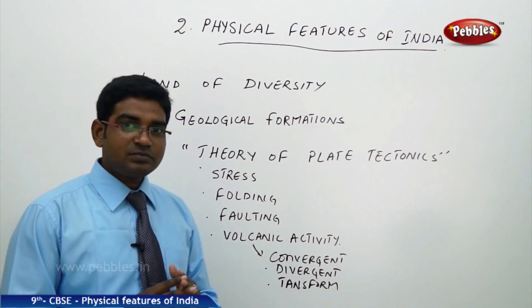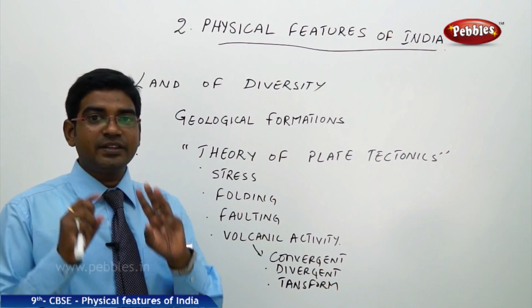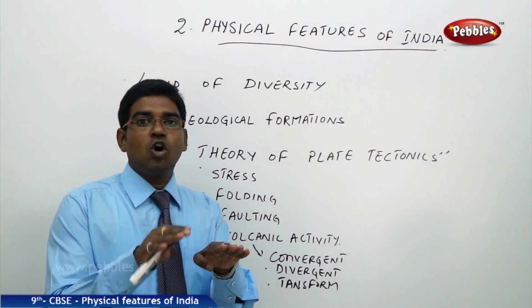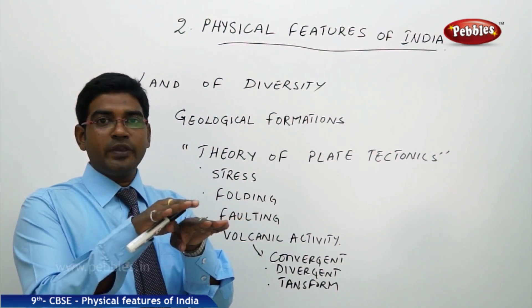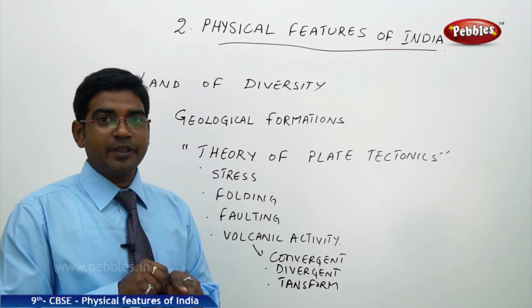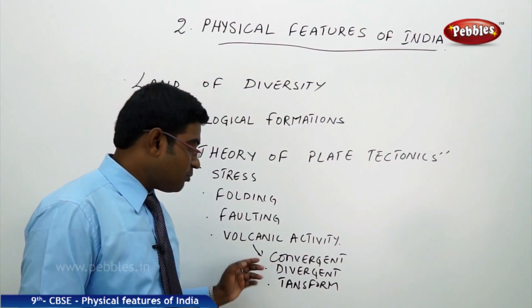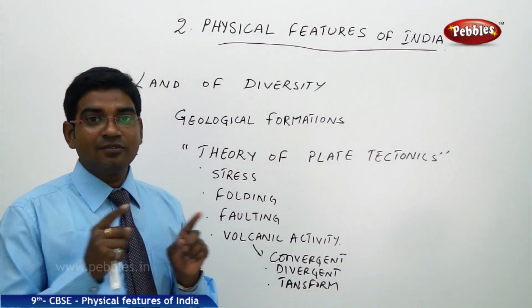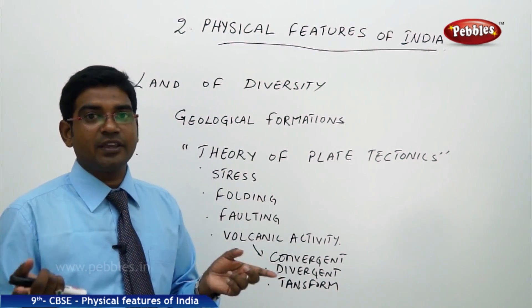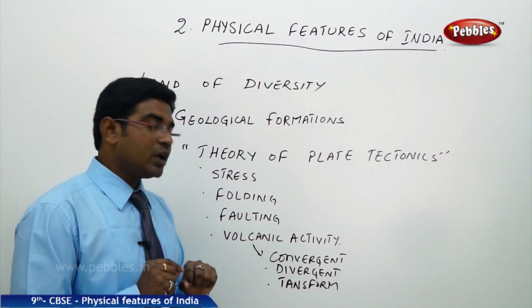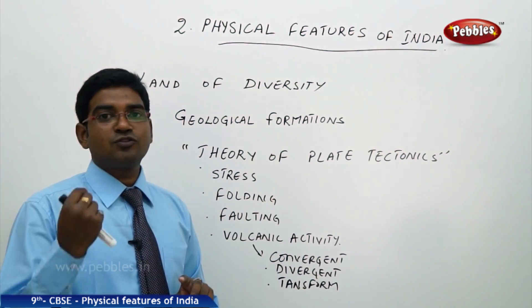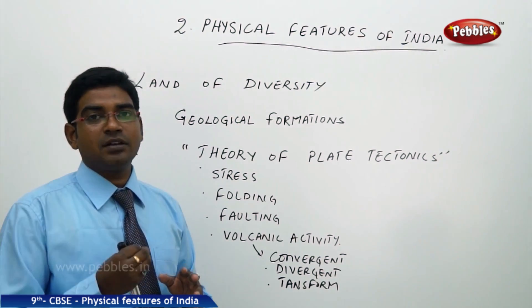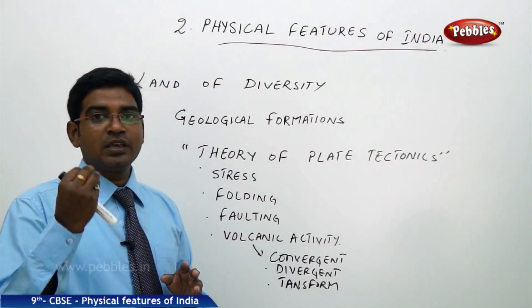All these reveal that the plates move in three different directions. One, the plates converge — one plate moving above the other — which is called convergent boundary or convergent movement. The second, when one plate moves away from the other, is called divergent movement. And the third is called the transform movement, which changes the momentum. These plate movements are the basic reason for the formation of different landforms in India.